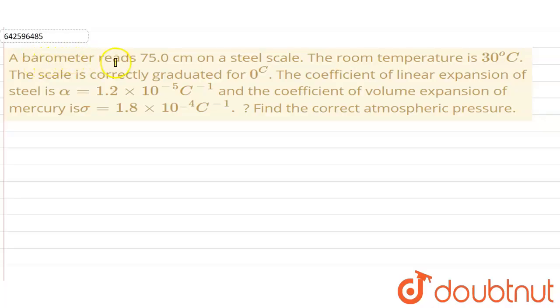Hello everyone, so our question is, a barometer reads 75 cm on steel scale. The room temperature is 30 degree Celsius.